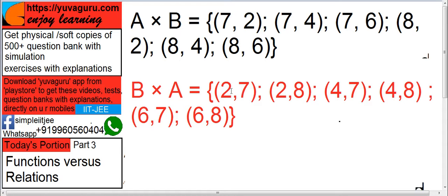Now, B cross A is B comes to x and A goes to y. So, the answer would be (2, 7), (2, 8), (4, 7) all these. Remember, number of elements are same in A cross B and B cross A. But, the position of x and y are different. That's why these two are not same.